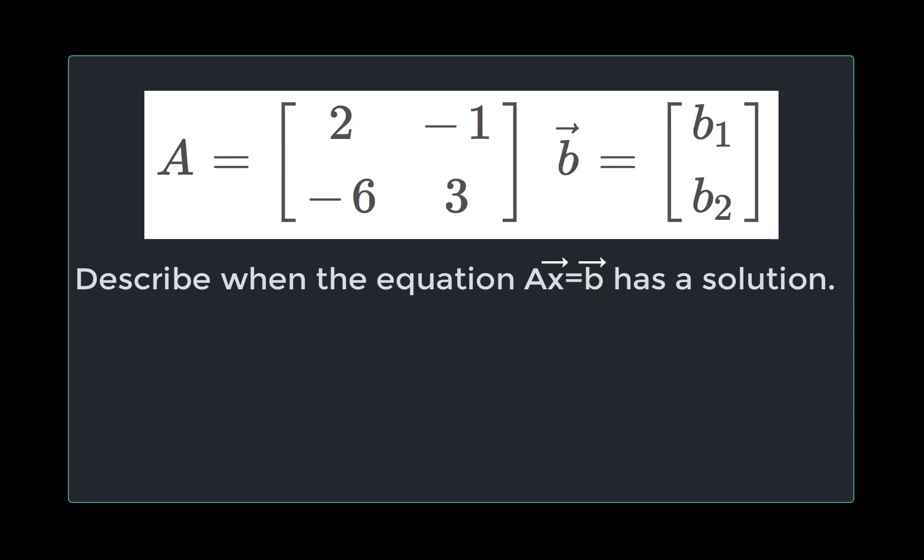The question we're working on today is: let A be the following matrix, and b be the following column vector. Describe when the equation Ax equals b has a solution.